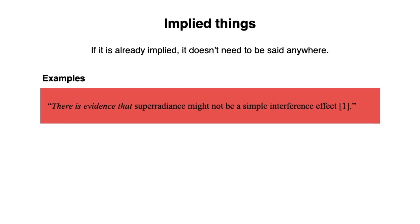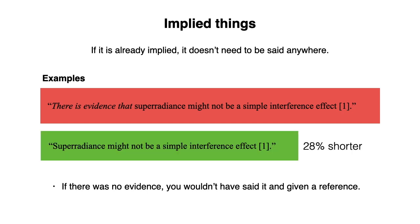What about this example? There is evidence that super radiance might not be a simple interference effect. If there was no evidence, you wouldn't have said it and given a reference. So it's shorter to just say, super radiance might not be a simple interference effect. Now maybe you wanted to emphasize that it's not confirmed, but the word might already does that.